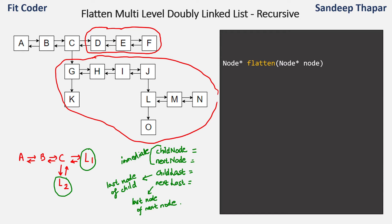Taking node C as an example: the child node is G and the next node is D. To find child last we need to flatten the entire linked list L2. The node that ends up last after flattening will be child last. For C, child last is N and next last is F — because flattening L2 ends at N, and flattening DEF ends at F. So for C: next node is D, child last is N, and next last is F.